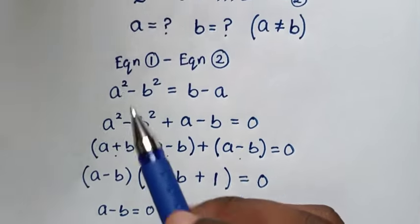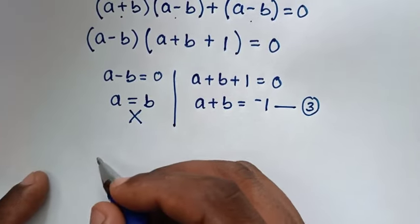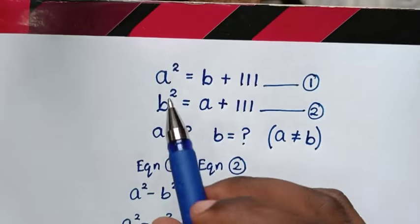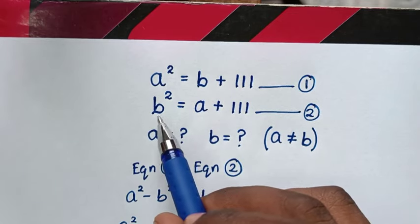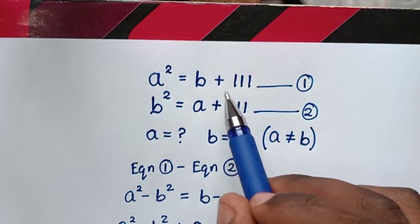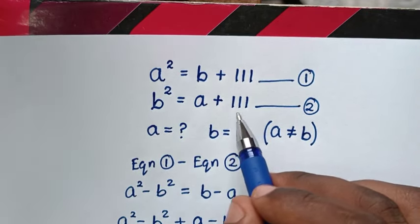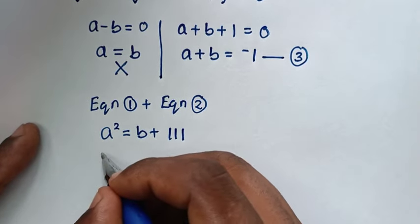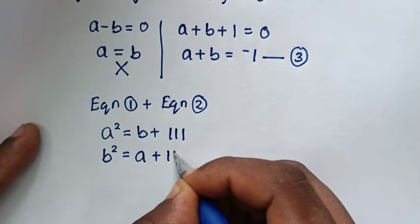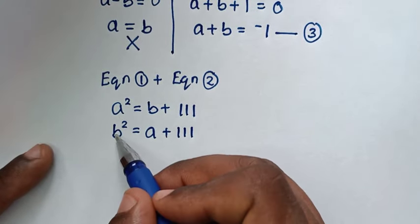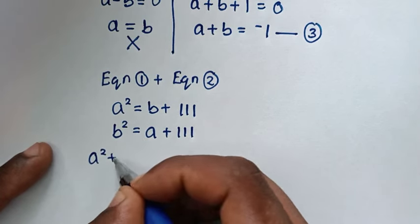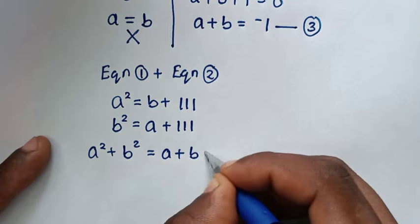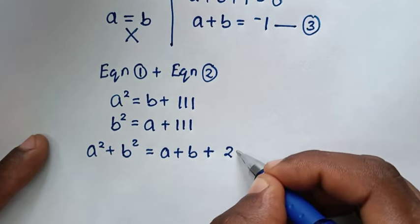Then in the next step — the second step — we'll take equation 1 plus equation 2. Equation 1 is a squared equals b plus 111; equation 2 is b squared equals a plus 111. Adding them, the left side gives a squared plus b squared, and the right side gives a plus b plus 222.